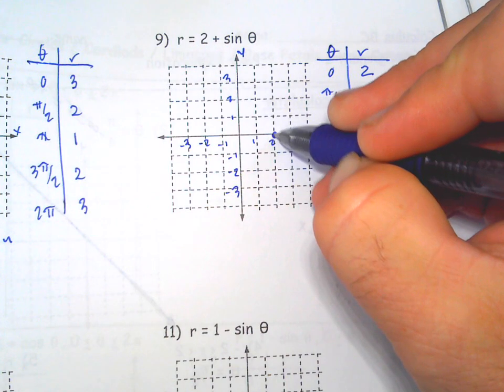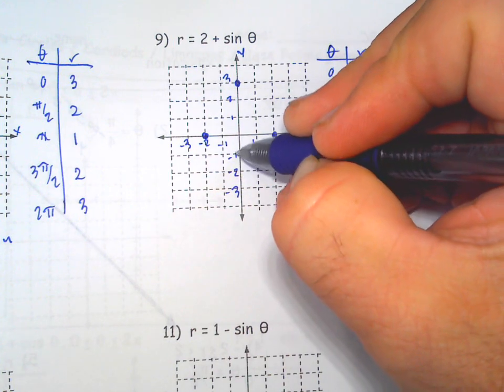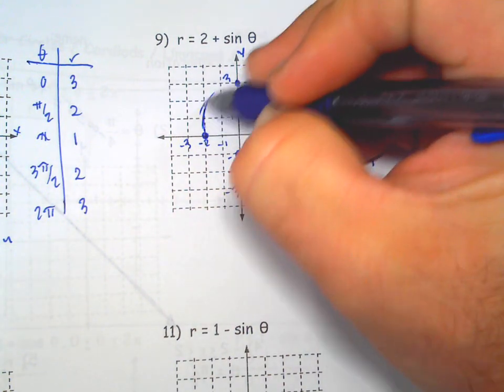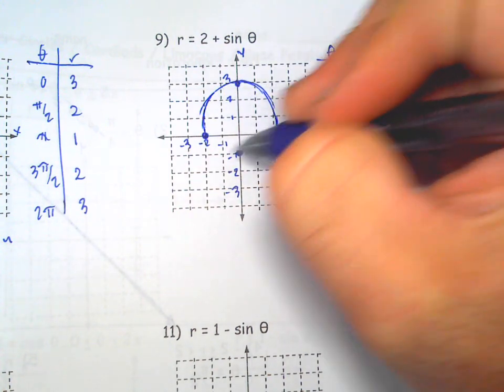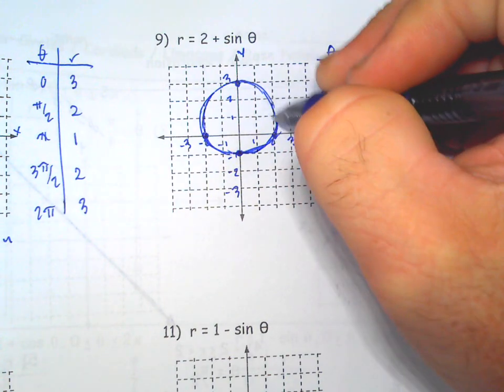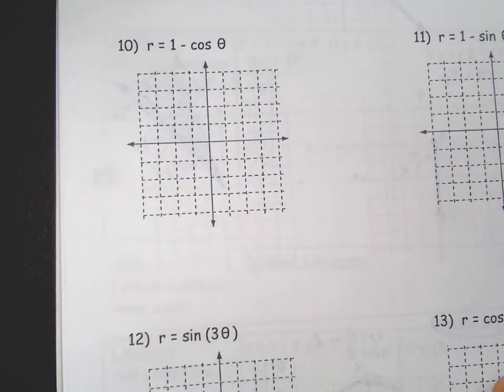And so, 0, 2 is right here, pi over 2, 3 is here, pi 2 is here, 3 pi over 2, 1 is down, positive radius, and we're back here. So, there you go, convex limaçon. Okay, all right, next one.